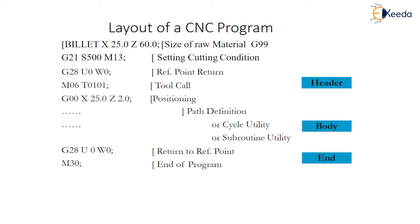Then lastly, there is a return to reference point — end of the program. Spindle off, tool on top — these conditions are considered in the end of the program. End of the program means these are the end parts of the programming. That part is also the same for all types of turning programs and same for milling also. So you understand there are three sections of a part program.